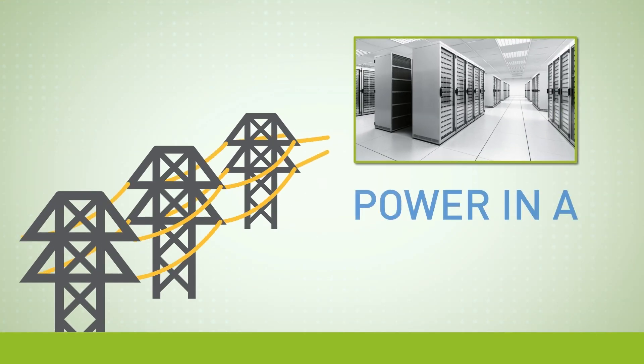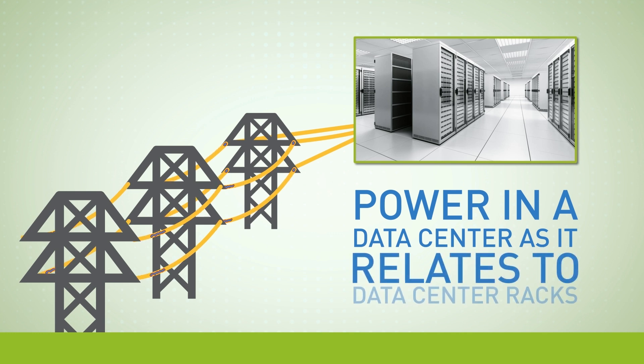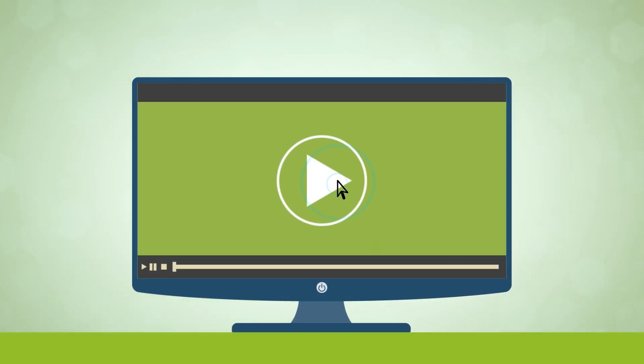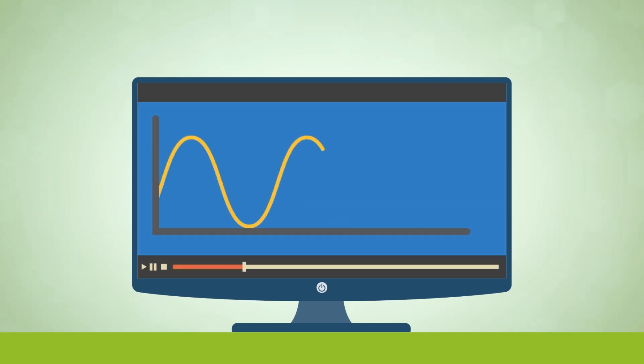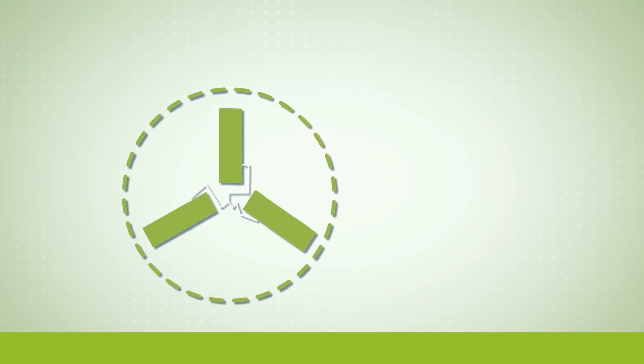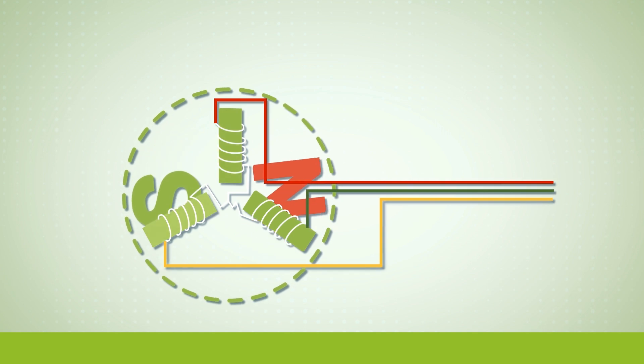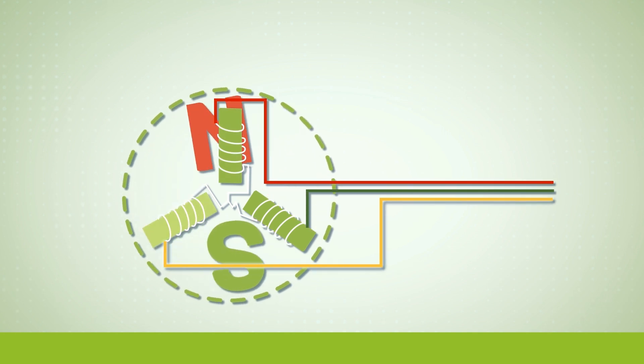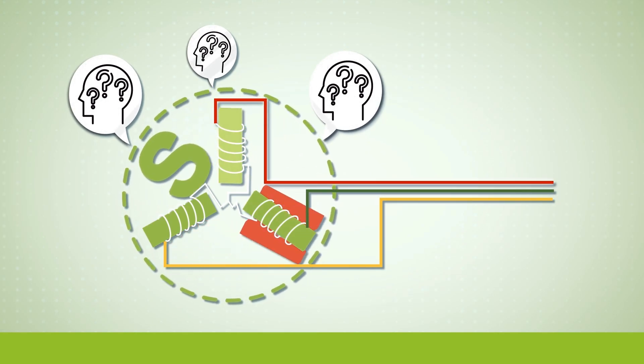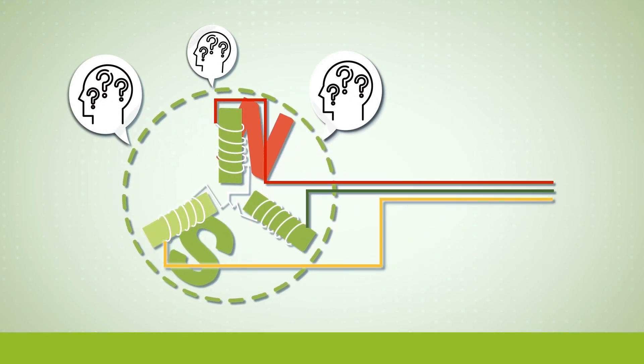Welcome to this video course on power in a data center as it relates to data center racks. As we'll illustrate in another video, the power that enters a data center is usually three-phase alternating current power, which is more commonly referred to as three-phase AC power. It's important to understand how alternating current works to appreciate that three-phase power is actually three lines that are 120 degrees apart. This concept confuses a lot of people, so to have that last sentence make sense, let's start with how current moves in single-phase power.